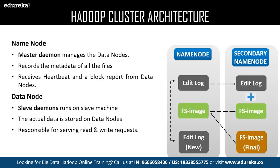The name node is responsible for managing the health of all data nodes. It receives a heartbeat from all data nodes at a particular interval of time, as well as a status update of tasks assigned. If any data node fails to respond with a heartbeat, the name node considers it dead and reassigns the task to the next data node. Data nodes are the slaves of the name node, responsible for storing actual data and updating task and health status to the name node via heartbeat. The secondary name node is not a backup of the name node, but acts as a buffer that saves the latest updates to the FS image obtained in intermediate processes and finally updates them to the final FS image.